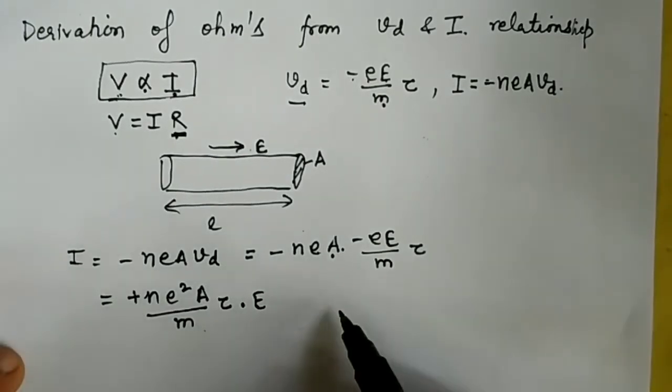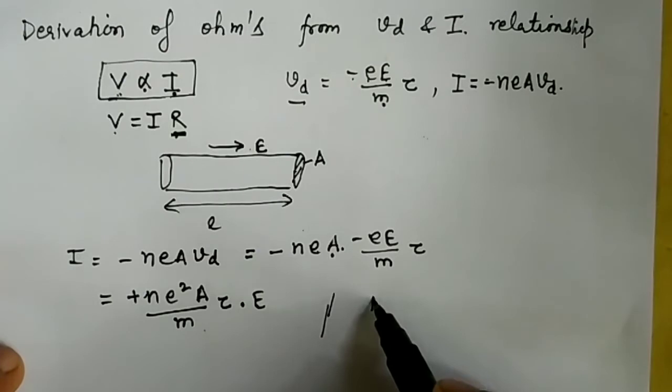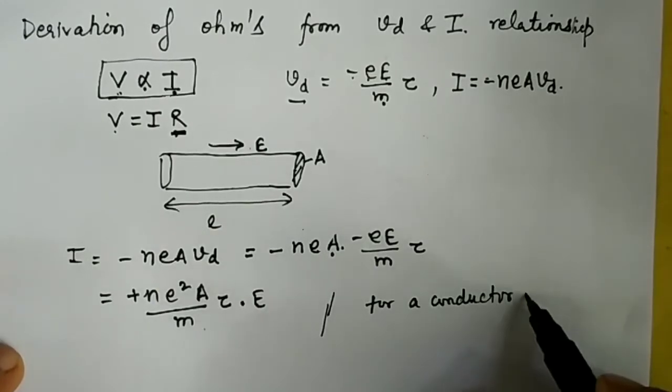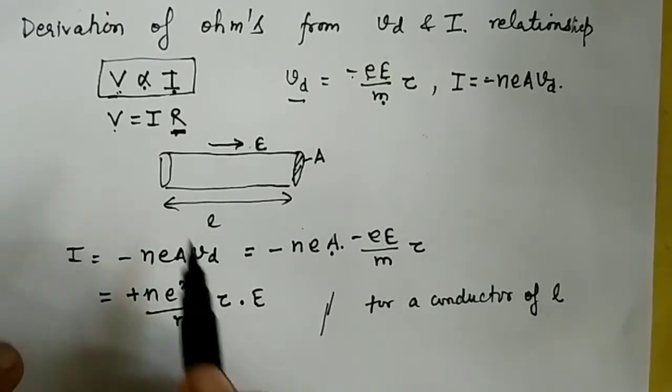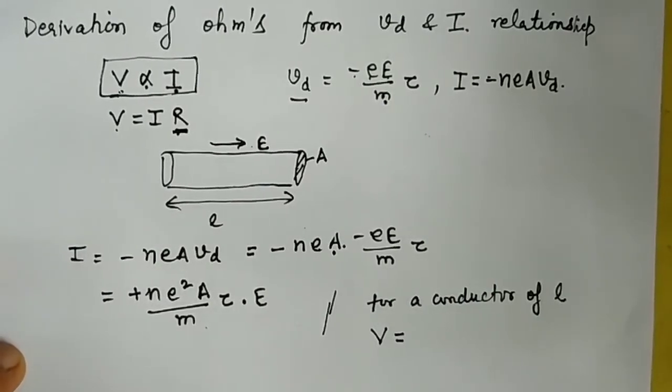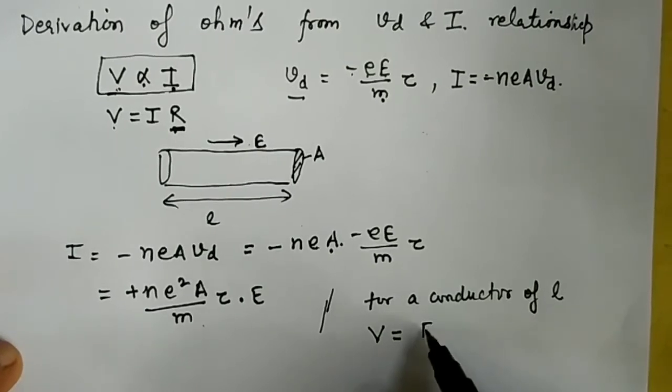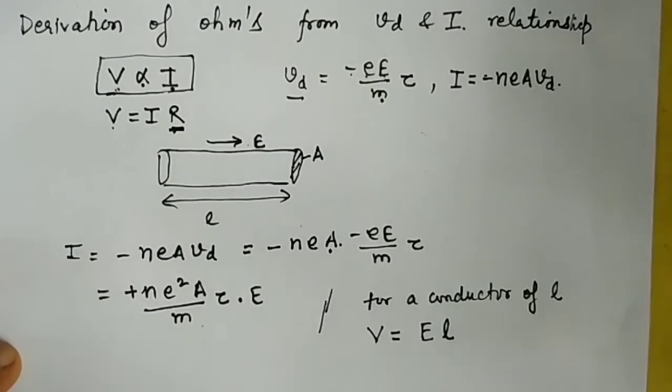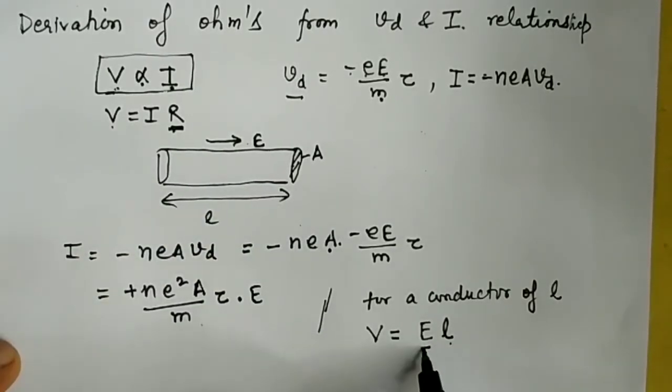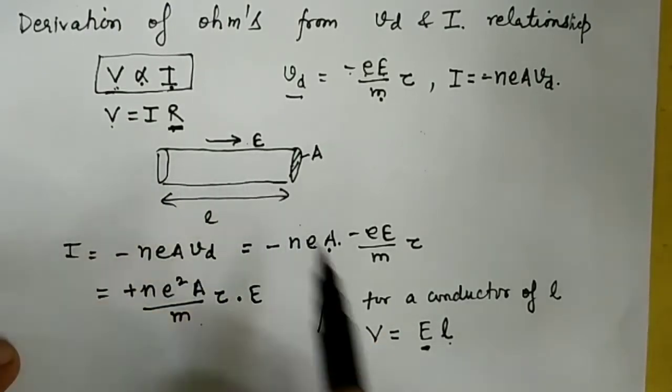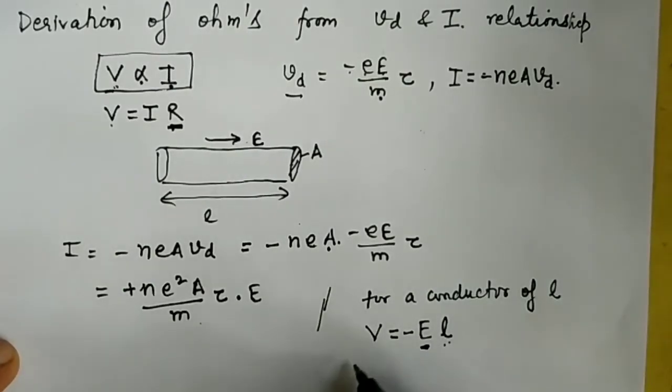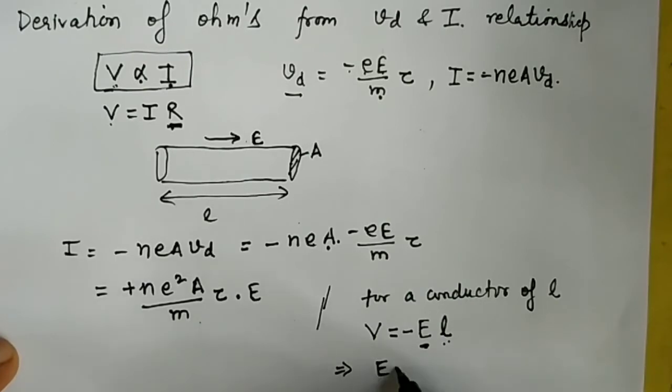So for this particular conductor of length l, the electric potential equals the line integral of electric field E·dl. As E is uniform, the total length of this conductor is l. Neglecting the minus sign, we get electric field equals V divided by l.